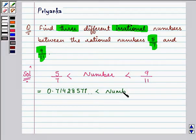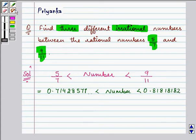And also 9 by 11 can be converted into decimals and can be written as 0.818181182 and so on. So that means the required number should be between these two numbers and there can be a lot many numbers.